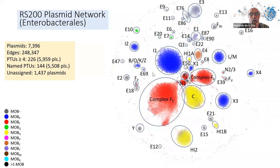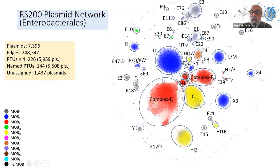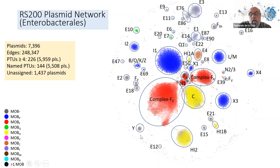Here you have the names for everything we find in the Enterobacteriales order. We have over 7,000 plasmids, meaning almost one-third of all plasmids in NCBI belong to hosts in this order. There are 226 PTUs with four or more members, and 144 named PTUs with 10 or more members. We try to keep the INCK classification when possible, but sometimes we have new names. The clusters are colored by MOB class, so you can see members of five different classes in the Enterobacteriales order.